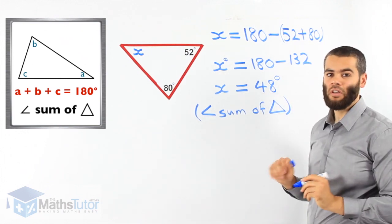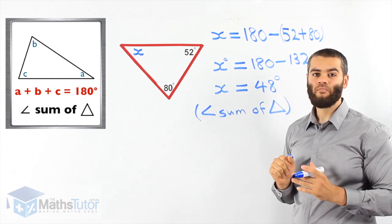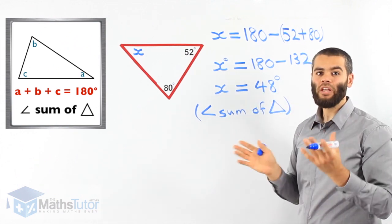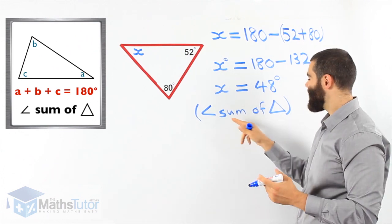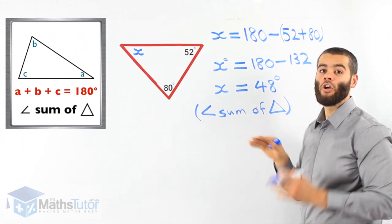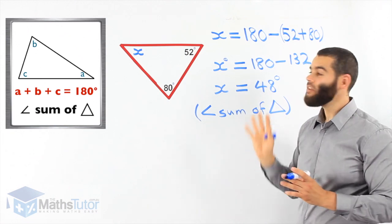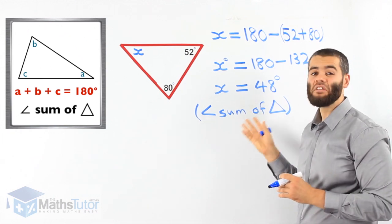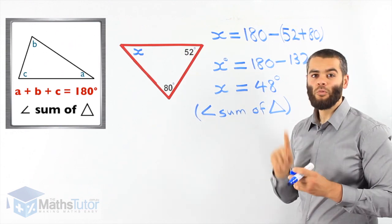Angle sum of triangle. It's that simple. We work out X. We found X is 48. How did you get that? We use the angle sum of a triangle rule. So our reason, angle sum of triangle. We get our marks for finding X. We also get our marks for writing the reason. This is the way to find missing angles in a triangle using angle sum of a triangle.